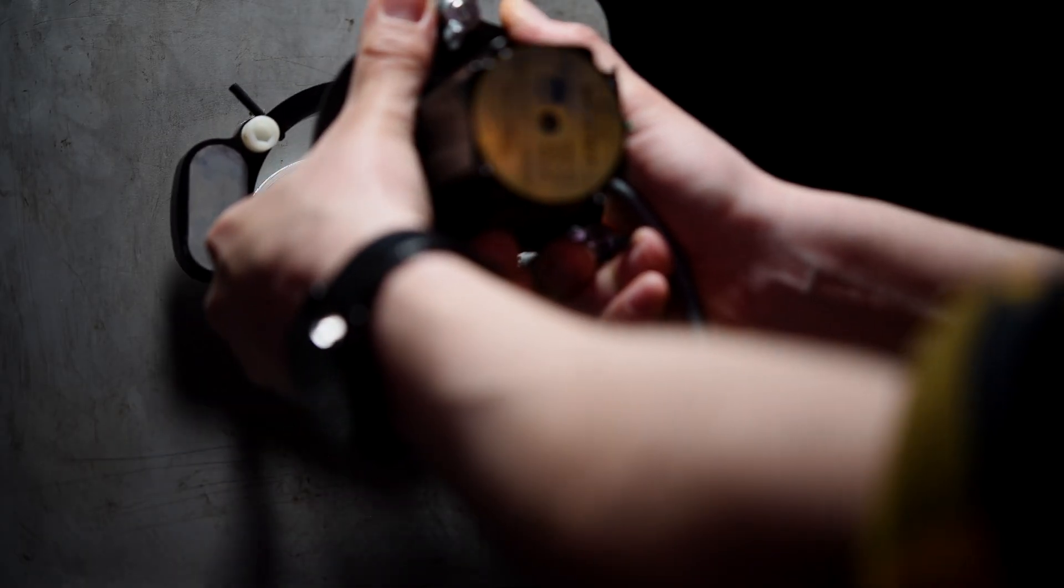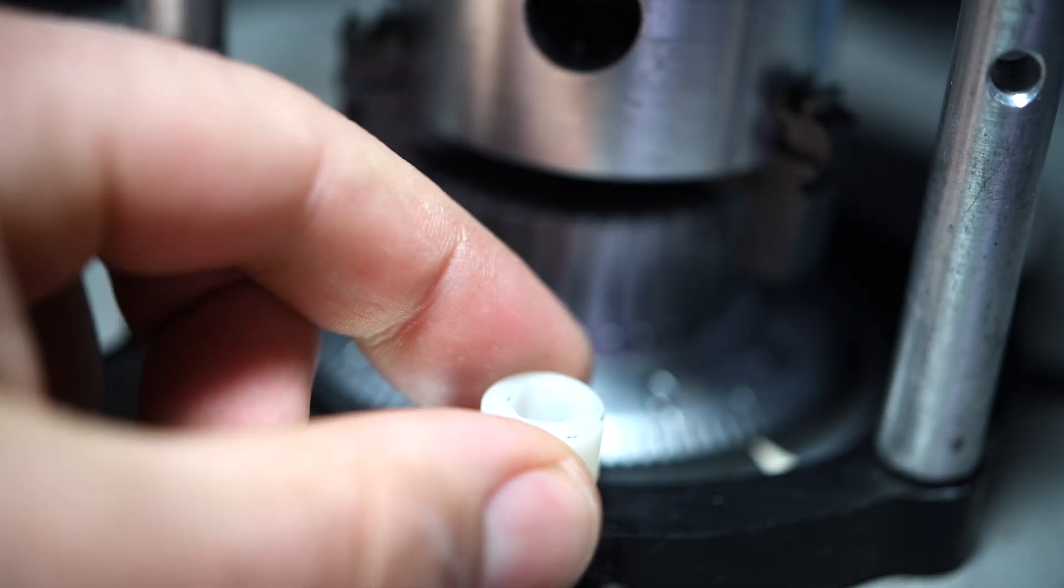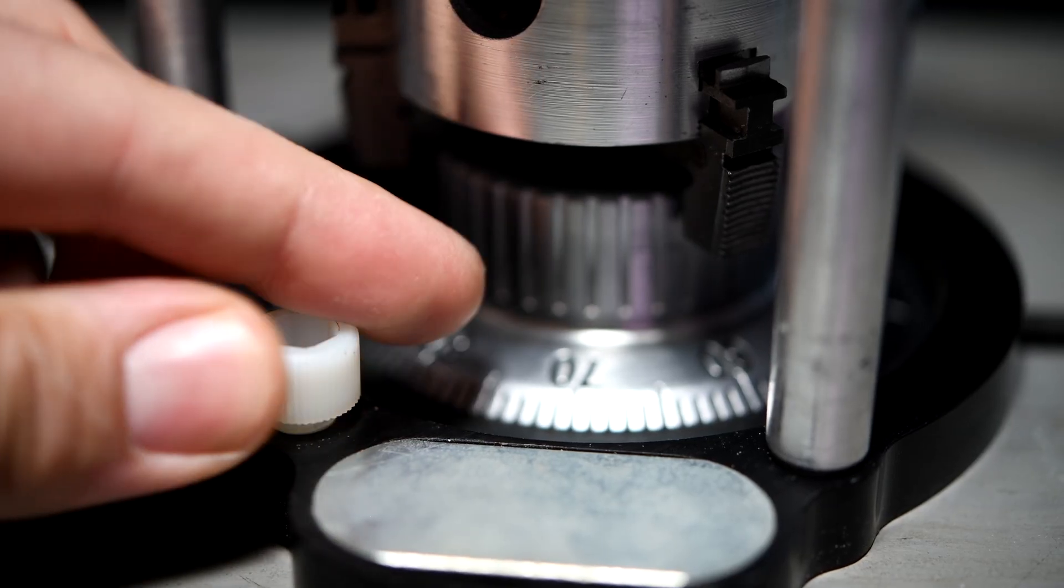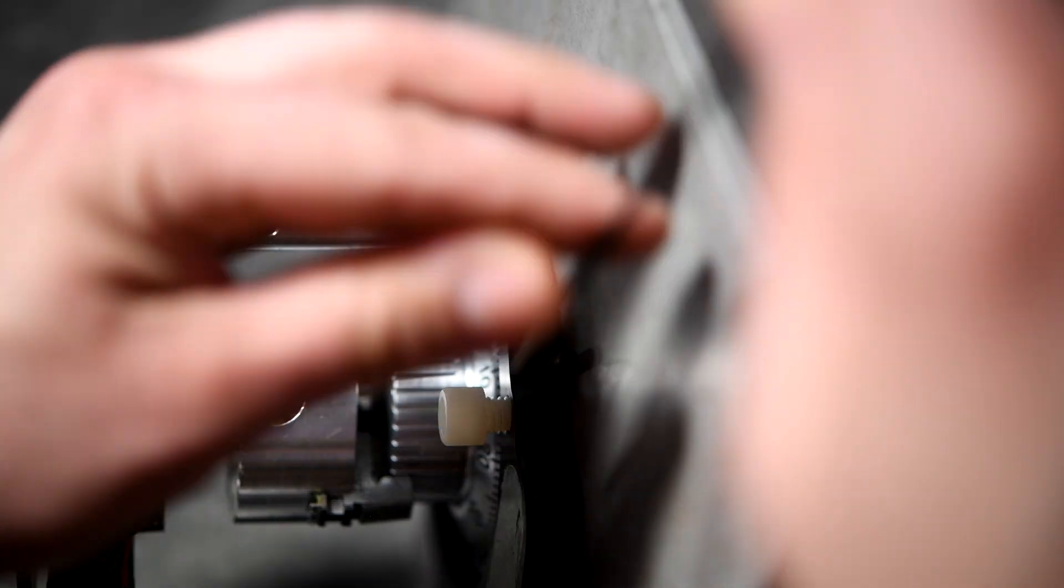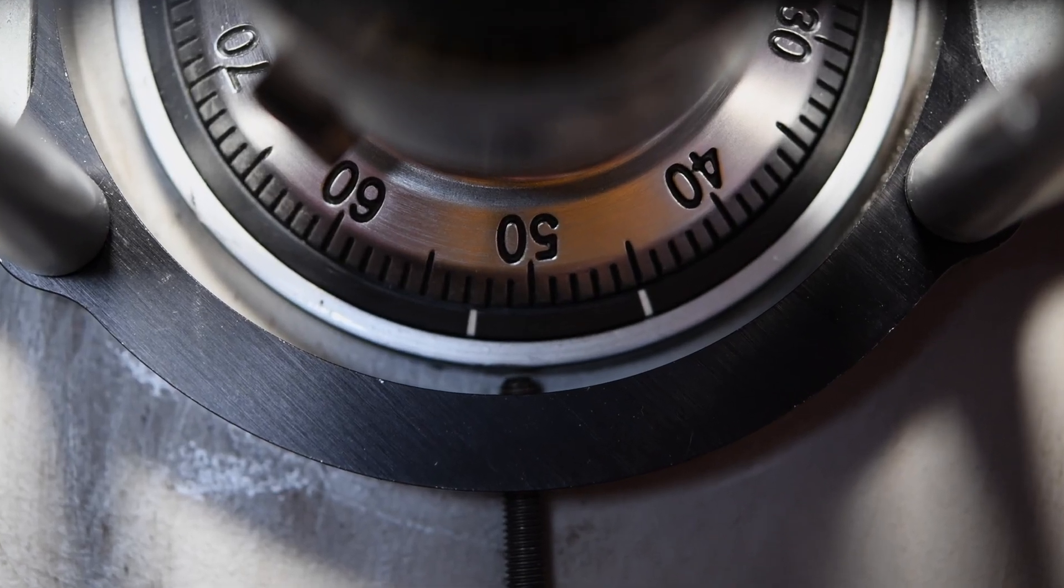The housing attaches to the face of the safe through powerful magnets. Then you loosen the plastic screws so the plate will lay flush. The screws at the side tighten to center the auto dialer and lock it in.